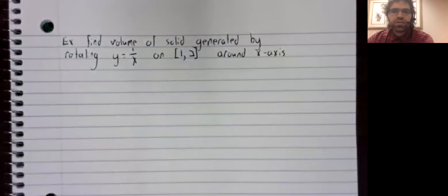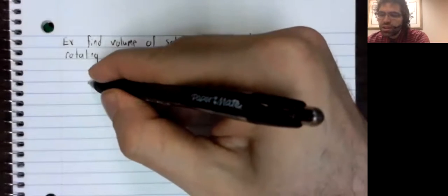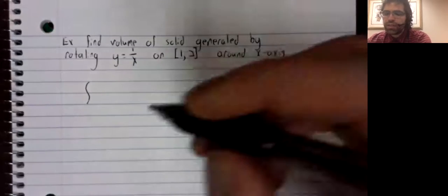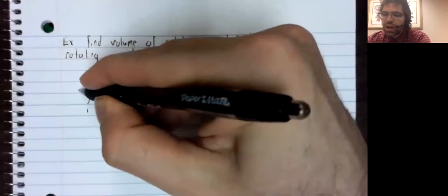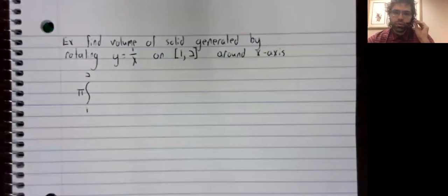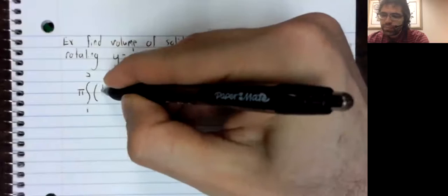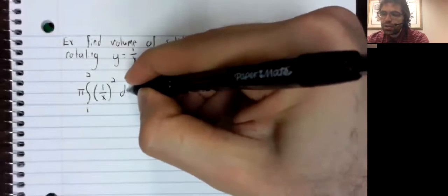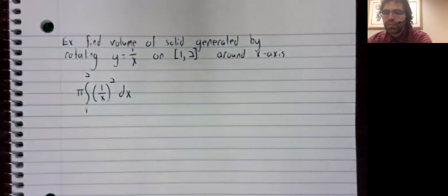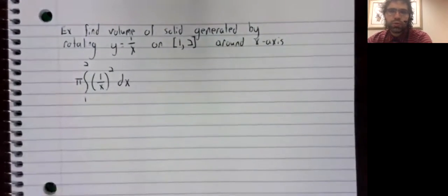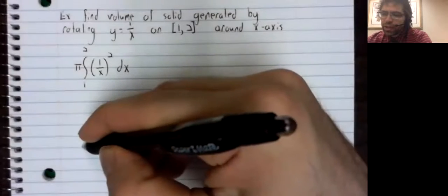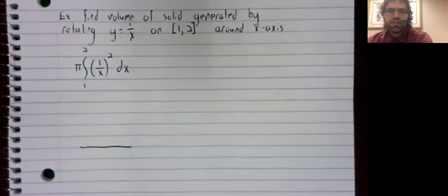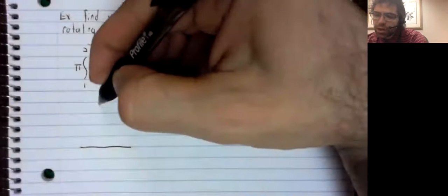In a sense, solving this problem is basically plug and play. Using the formula from the previous video, it's pi times the integral from 1 to 2 of the function squared dx. And we will compute this integral, but let's remind ourselves where this comes from. Remembering that is going to be very helpful down the line.